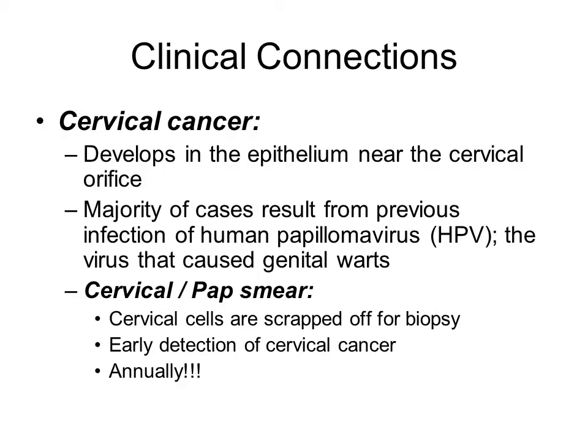From a clinical perspective: cervical cancer typically develops near the cervical orifice, at the bottom of the uterus, in the epithelial tissue there. Many cases of cervical cancer can be linked to a previous HPV (human papillomavirus) infection, though that's not the sole cause. Because the cervix is internal, an individual may be asymptomatic for long periods. That's why the pap smear is important — a simple procedure that scrapes cells from the cervix to check for abnormalities. Early detection is critical; cervical cancer can be easily treated if caught early, so annual screening is strongly advised.